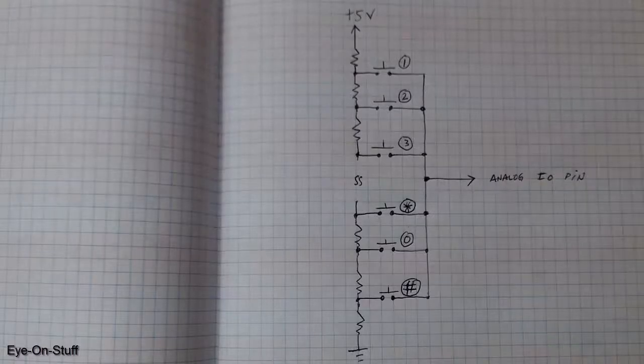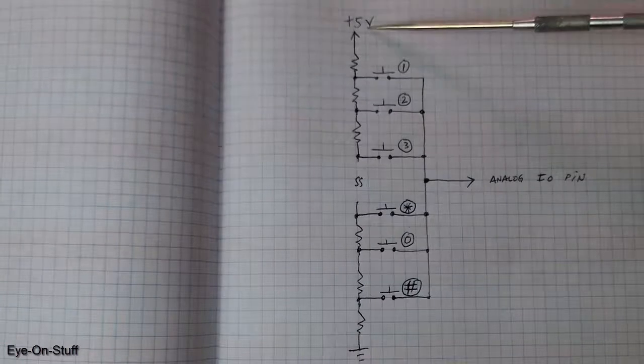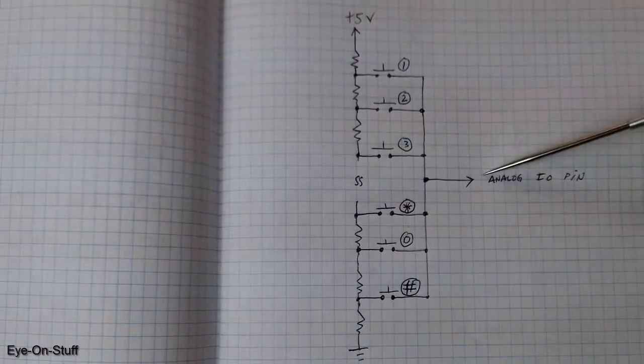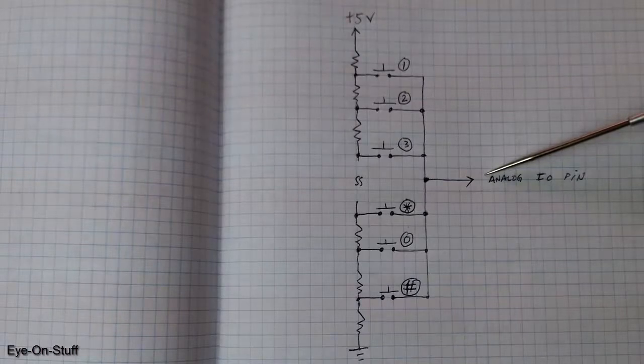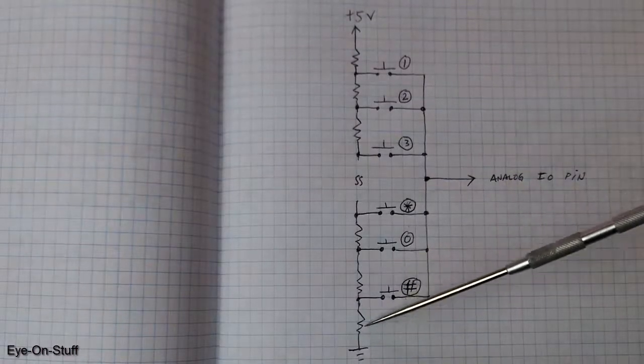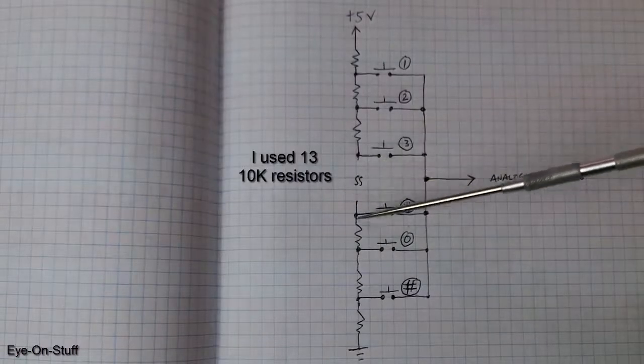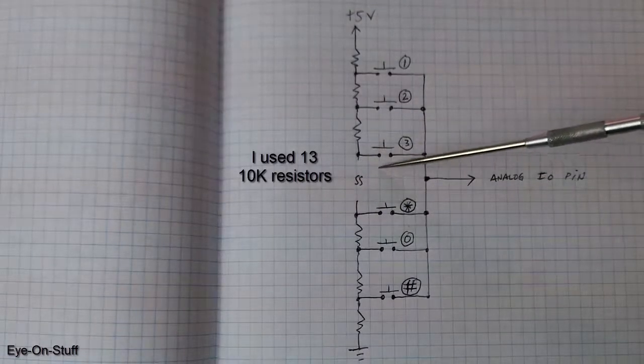Here's the schematic for the modification. This is the 5 volt connection. This is ground and this goes to the analog I/O pin. I only drew six resistors here. You can insert seven more resistors in series and six buttons.